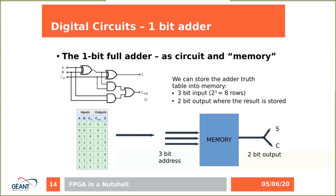We can also write down the truth table where we enumerate all inputs and outputs. This table can be encoded into a special memory with a three-bit address and two-bit output, where we encode the value of the sum and the carry. This is crucial for FPGA because the FPGA very typically encodes logical circuits into a truth table, and then generates the content of the memory addressed by the input — so this is another possible implementation.